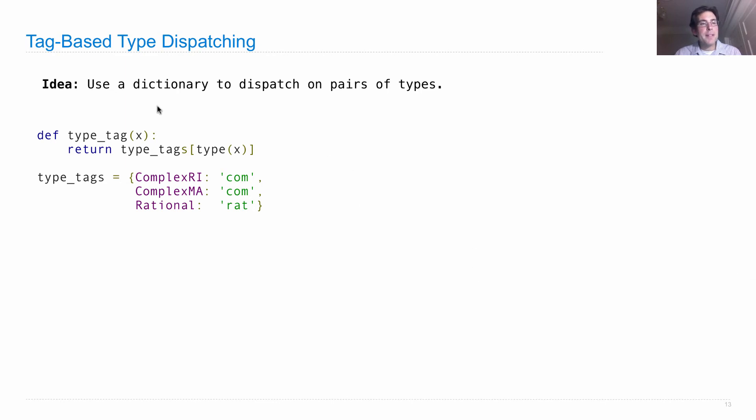And what are those type tags? Well, the point of type_tag is that it gives the same value for both ComplexRI and ComplexMA. Namely, that we call it something complex.